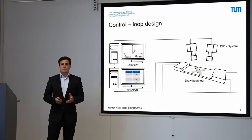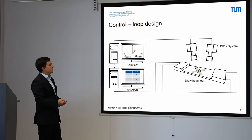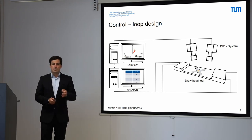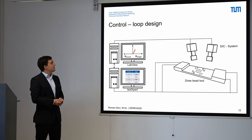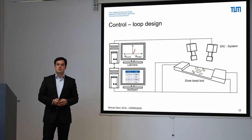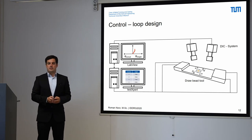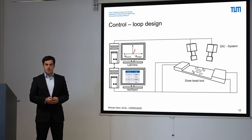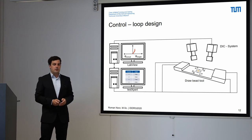Here we can see the setup of the control loop. On the right hand side we have the draw bead tool and the cruciform specimen. The strains in the center of the specimen, which are only measured in the area with a reduced thickness with a diameter of 12 mm, are measured by the DIC system. Due to the small area we are calculating and measuring the strains, we are able to measure with a frequency of 8 frames per second, which is already quite close to the suggested 10 frames per second in the ISO norm for Nakajima testing. So we can quite precisely and in real time calculate the strains currently on our specimen.